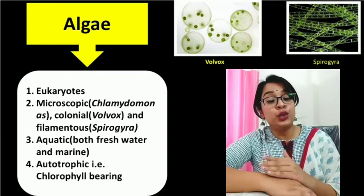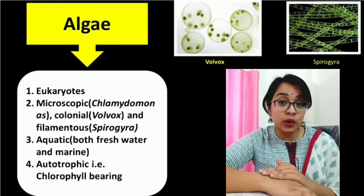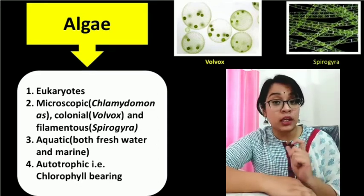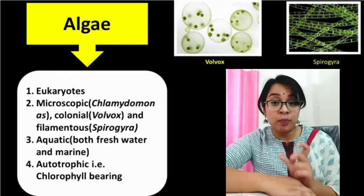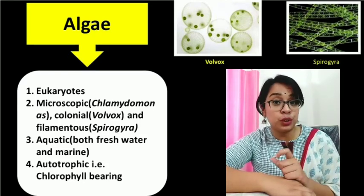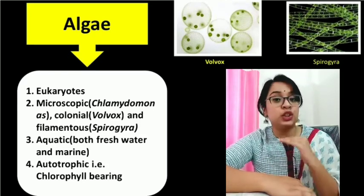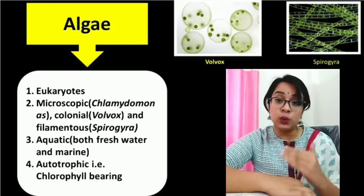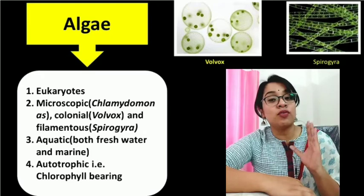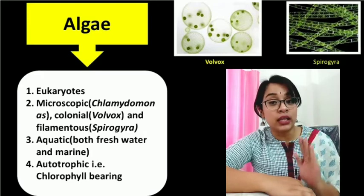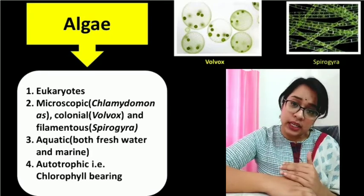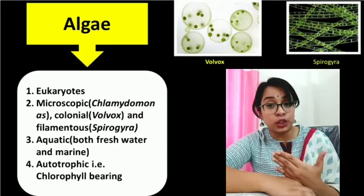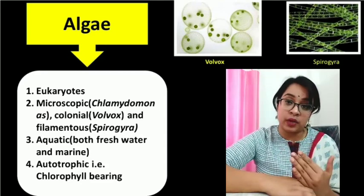Algae are eukaryotic — meaning they have a true nucleus. Their genetic material is enclosed within a membrane known as the nuclear membrane, and they have a well-defined nucleus. Secondly, algae may be found both in fresh water as well as marine water — meaning you can find algae in ponds or lakes and even in oceans or sea.